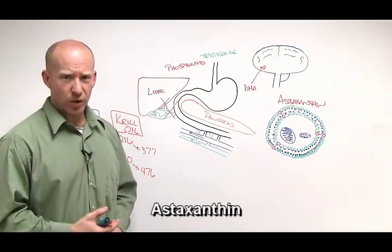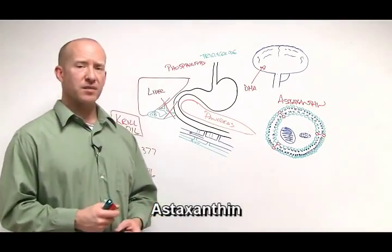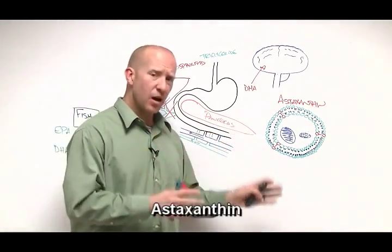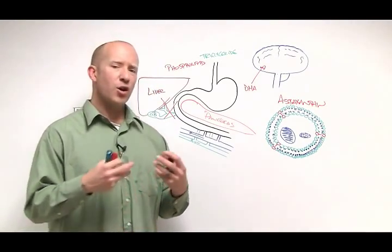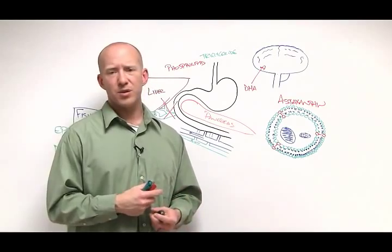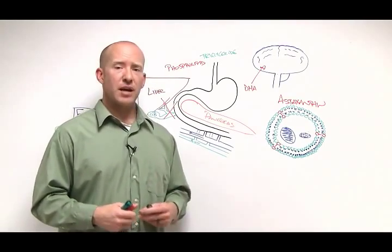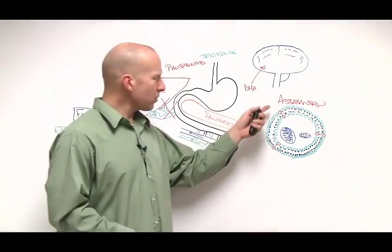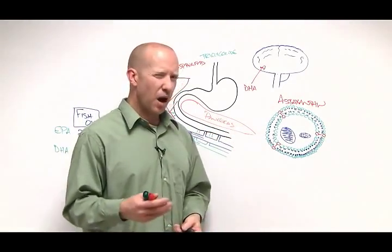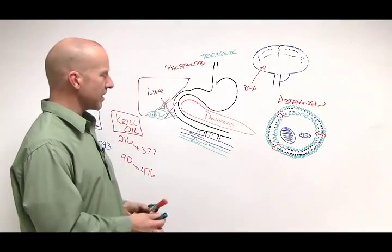The one other benefit is astaxanthin. Astaxanthin is found in krill oil and it is a really potent antioxidant. Astaxanthin by itself has been shown to be helpful in skin conditions, improving eyesight, cardiovascular disease and heart issues, diabetes, dementia, and many inflammatory conditions like asthma. Here's the real reason why astaxanthin is probably so potent and effective as an antioxidant.